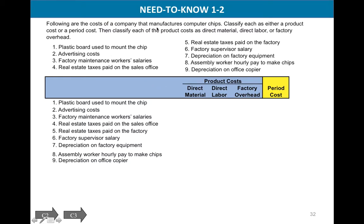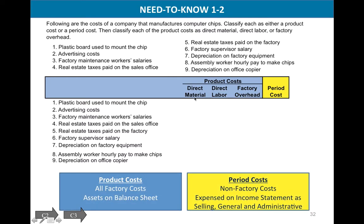Let's look at a company that makes computer chips. The computer chip is our final product. We need to classify each item as product or period — product meaning factory, period meaning office or headquarters — and if it's a product cost, classify it as direct material, direct labor, or factory overhead. Plastic board used to mount the chip: it's used in the plant, so it's a product cost. It's a direct material because we know exactly how many boards are needed — the number of boards equals the number of chips produced.